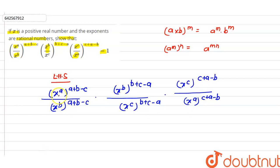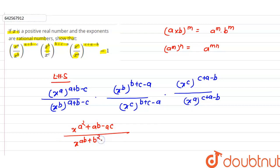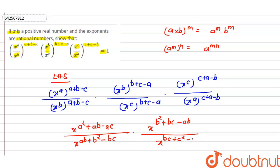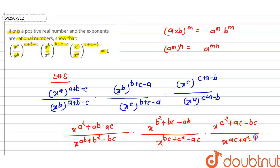Using the concept (a^m)^n = a^(mn), we expand: numerator becomes x^(a²+ab−ac) × x^(b²+bc−ab) × x^(c²+ac−bc), and denominator becomes x^(ab+b²−bc) × x^(bc+c²−ac) × x^(ac+a²−ab).